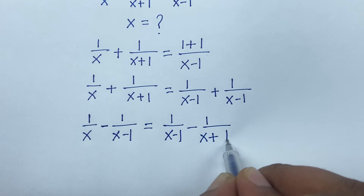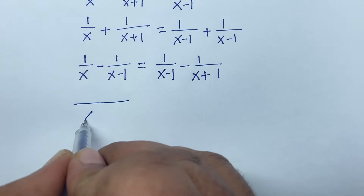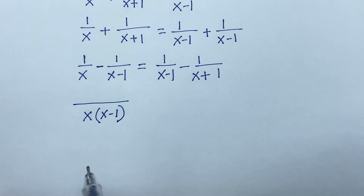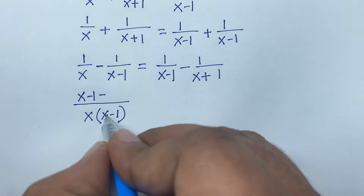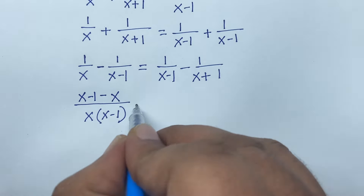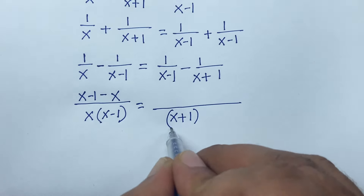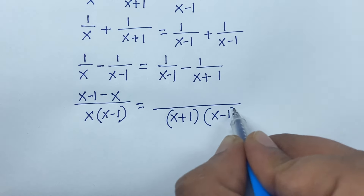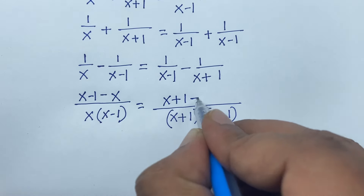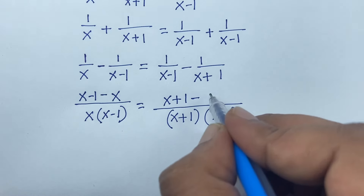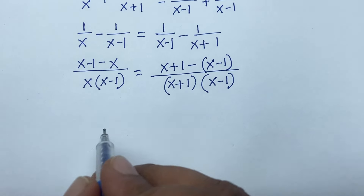The least common value on the left is x times x minus 1. So dividing: x minus 1 minus x over x times x minus 1. On the right side, the least common value is x plus 1 times x minus 1, giving us x plus 1 minus x minus 1.